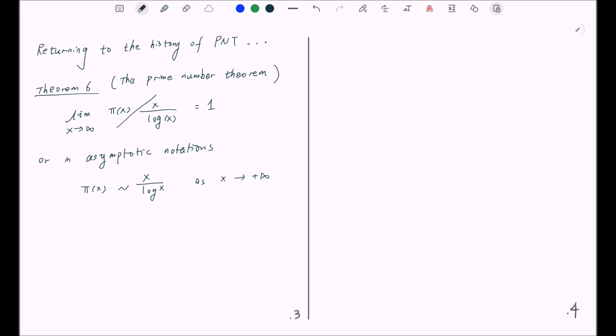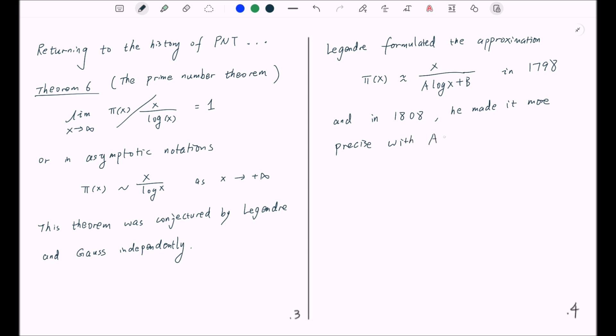This theorem was conjectured by Legendre and Gauss independently. Legendre formulated the approximation π(x) approximately equal to x divided by a times log of x plus b in 1798. And in 1808, he made it more precise with a equal to 1 and b equal to a number a little bit less than 1.